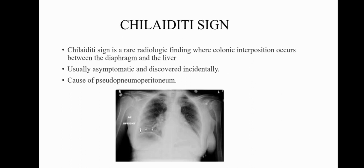So, what is Chilaiditi sign? Chilaiditi sign is a rare radiological finding in which there is colonic interposition between the diaphragm and the liver. It is usually an asymptomatic finding which is discovered incidentally, and it is a cause of pseudopneumoperitoneum. This image shows a chest x-ray with white arrows pointing to the interposed segment of colon between the right hemidiaphragm and the liver, which appears to be pneumoperitoneum but in reality is pseudopneumoperitoneum, or Chilaiditi sign.